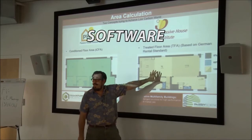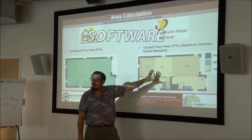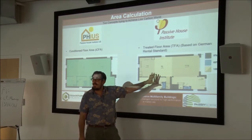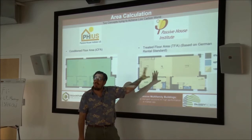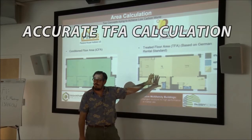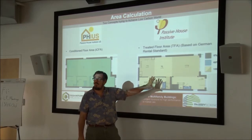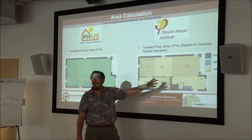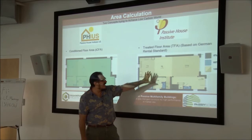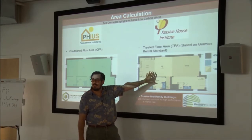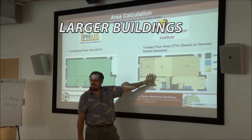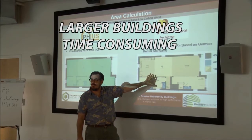The software was set up based on this treated floor area, so you had to do it to get accurate results. You have to have an accurate treated floor area calculation to enter into the software — garbage in, garbage out. If I have the wrong number going in, I'm going to have the wrong answers coming out. So you have to go through this calculation, and on larger buildings it can be very time consuming.